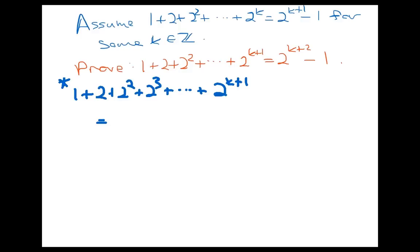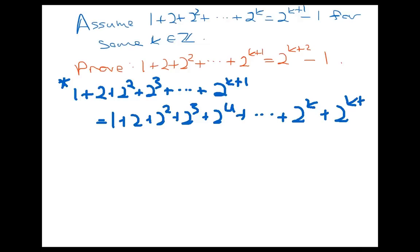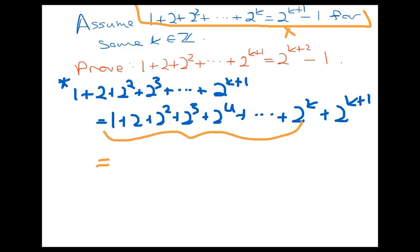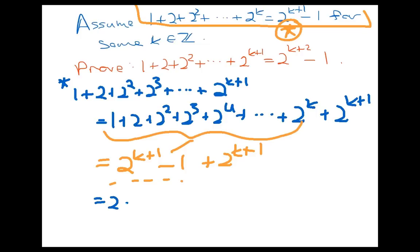Let's look at only the left-hand side of the equation we want to establish. One thing we can do is reveal some of the terms hidden in the dots. The next-to-last term would be 2 to the k. Now here's where I can use my inductive hypothesis — look at the collection of terms all the way up to the next-to-last one. The inductive hypothesis says I can rewrite those terms as 2 to the k plus 1 minus 1. That entire left-hand side collapses into 2 to the k plus 1 minus 1 plus 2 to the k plus 1. Now I have two terms of 2 to the k plus 1, so I can rewrite as 2 times 2 to the k plus 1 minus 1.